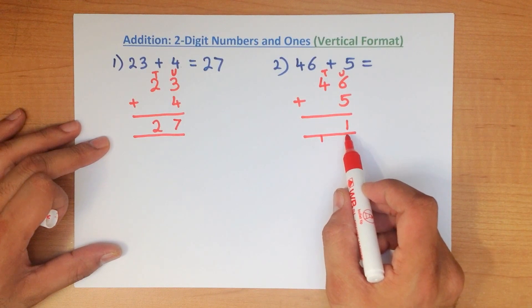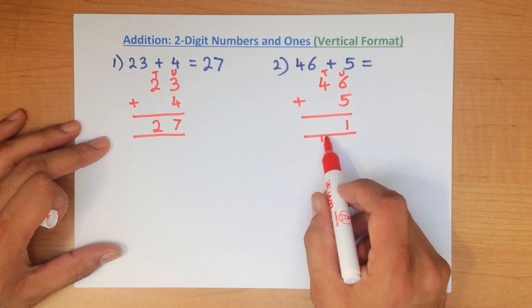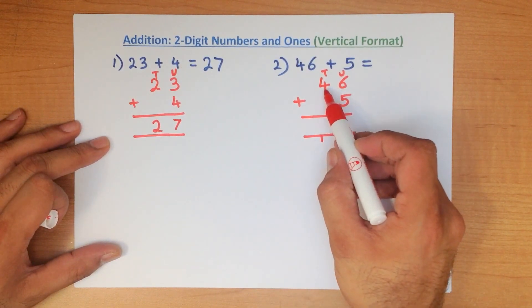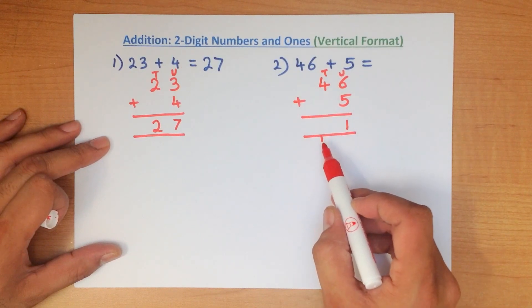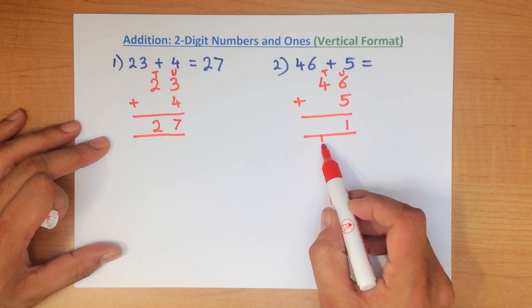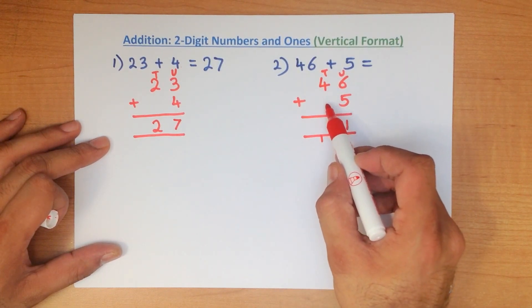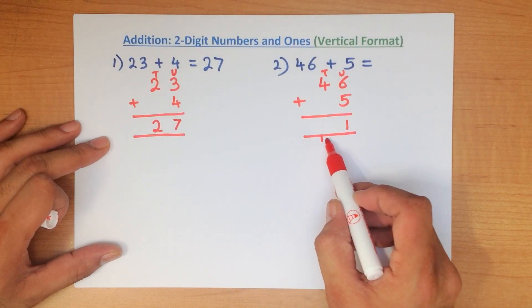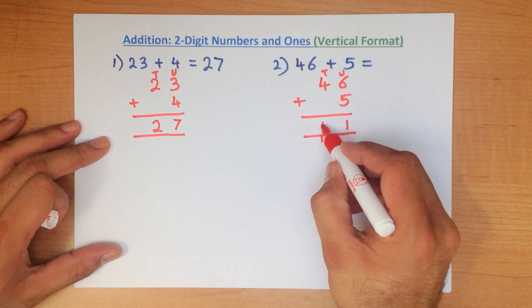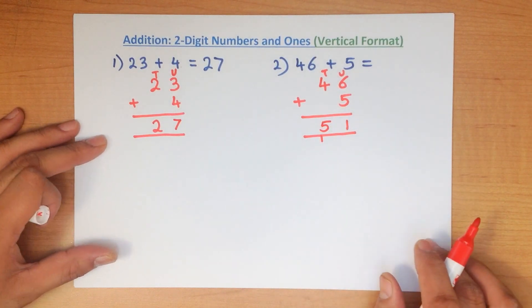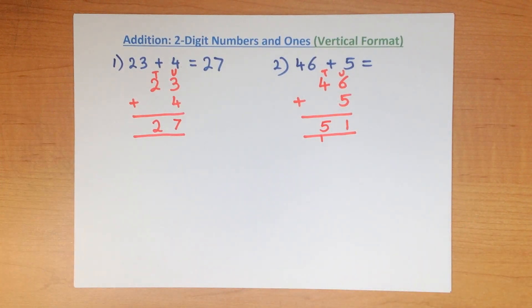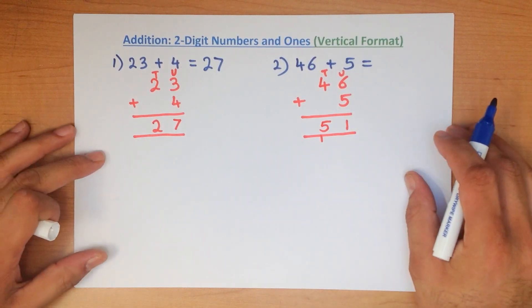Having added the units, we now add the tens. So what is 4 plus 0 plus 1? Don't forget this. Well, 4 plus 0 is 4. 4 plus 1 is 5. And that is our answer. 46 plus 5 is 51.